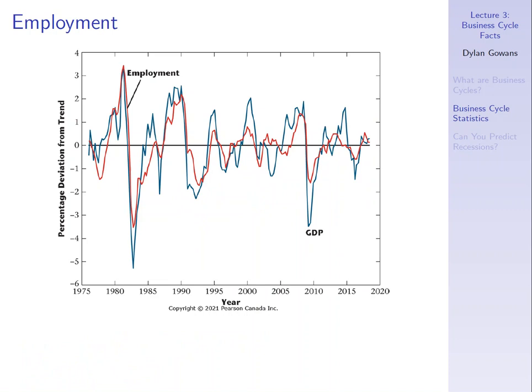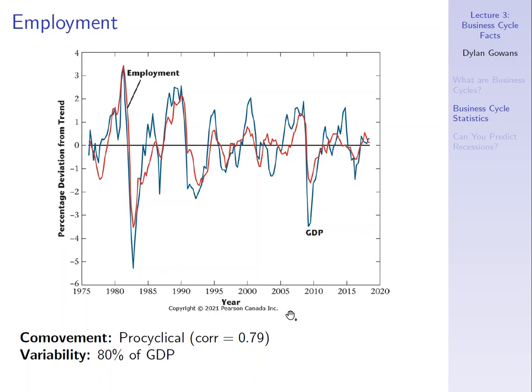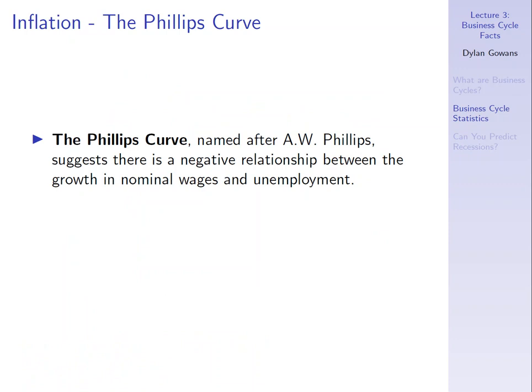For employment: it is pro-cyclical — when GDP is high relative to trend, so is employment. When the economy is booming, there are lots of jobs. This is confirmed by a positive and high correlation coefficient of 0.79. Employment is less variable than GDP, at about 80% as variable. In terms of lead-lag, the textbook says it's lagging, though if it is, it's not lagging by very much — so I'd put 'lagging' with a question mark.